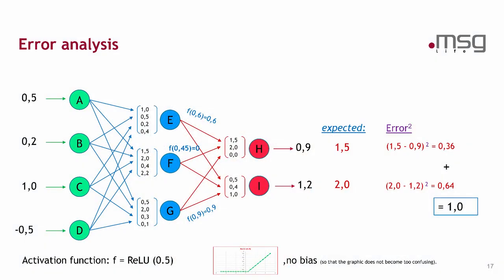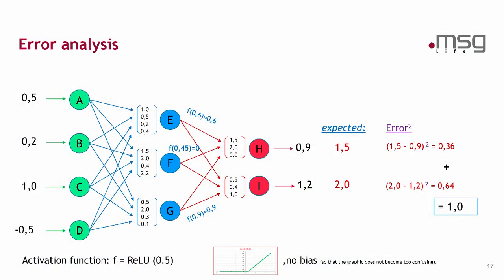So now I know what I have expected for this input. For the first data record of my training data set, I have expected an output of the unit H of 1.5 and for the unit I of 2.0. So I have a deviation between the calculation and the expected values. But that's not surprising because I have chosen the weights randomly. So I can't expect that the calculated output is nearby the expected output. So what have I done now?